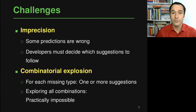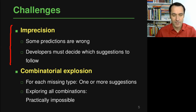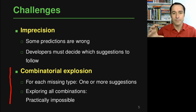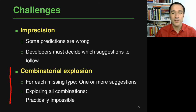These probabilistic type prediction approaches have advantages but also bring challenges. The first is imprecision: because these models are probabilistic they may make wrong predictions, and in practice they do. A developer must decide which suggestions to follow. The second problem is a combinatorial explosion — for each missing type there will be one or more suggestions, and exploring all combinations to decide which to use is exponential in the number of type slots, making exhaustive search infeasible for large programs.